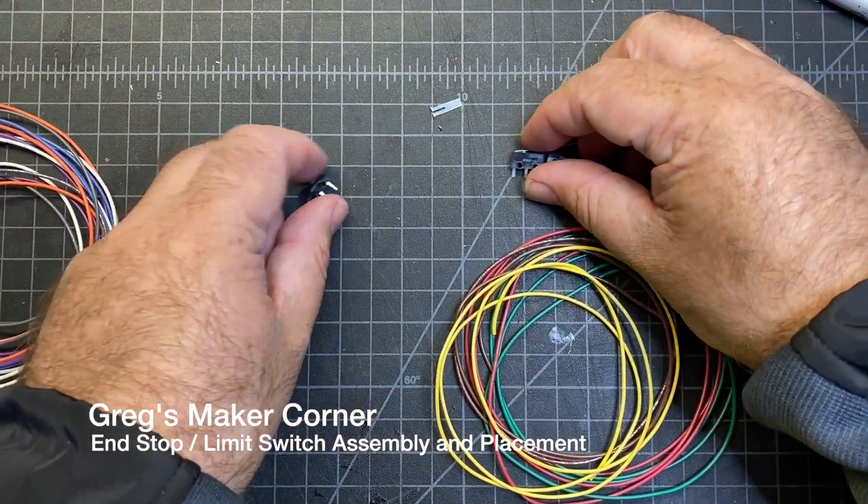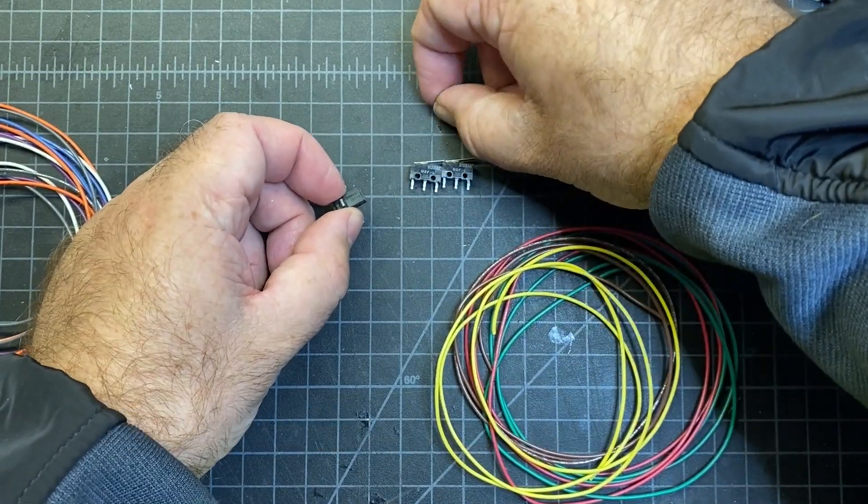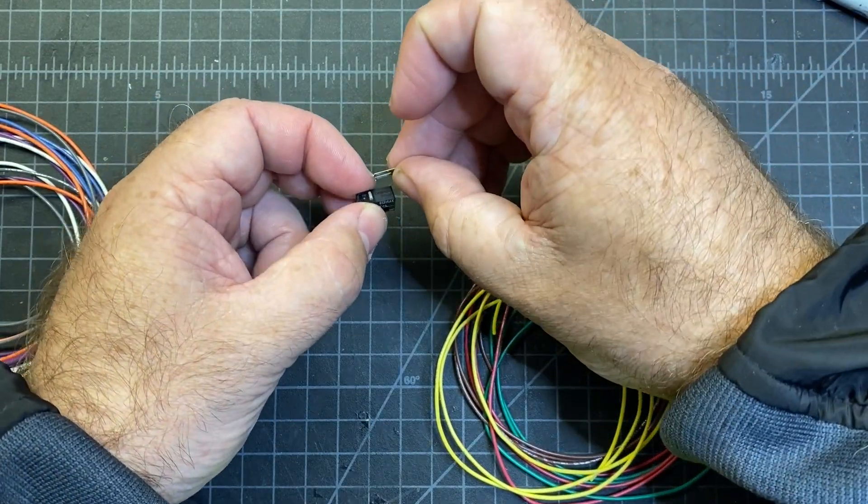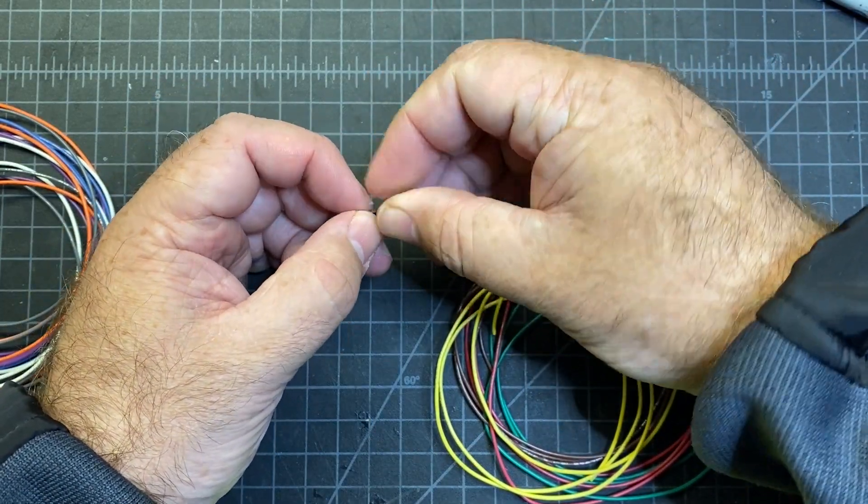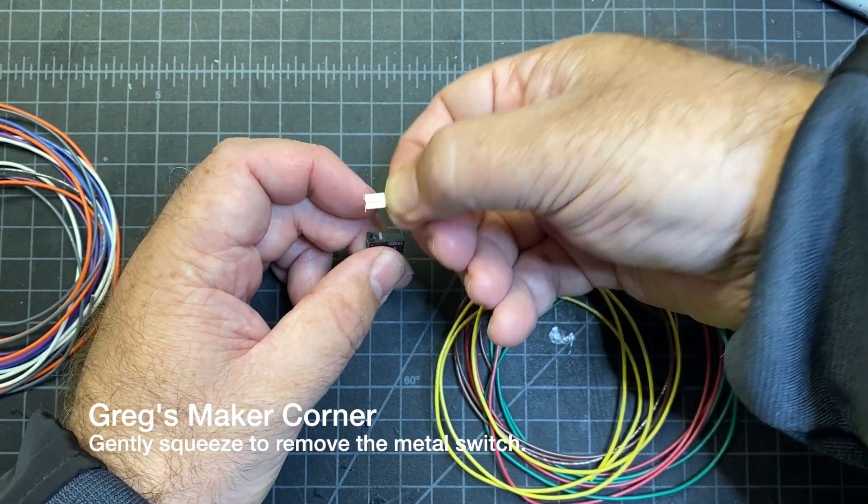For the next step we're going to be preparing the limit switches for the X, Y, and Z axis. The Z, the first one that I have here, you're going to need to remove the metal piece a little bit. All you need to do to remove it is to squeeze it in at the end here where it connects and then lift it out.